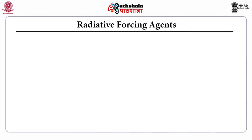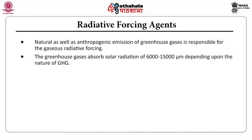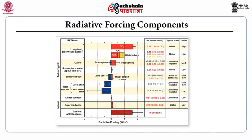Natural as well as anthropogenic emission of greenhouse gases is responsible for gaseous radiative forcing. The greenhouse gases absorb solar radiation of 6,000 to 15,000 micrometers depending upon the nature of the greenhouse gas. The agents of radiative forcing are carbon dioxide, methane, nitrous oxide, chlorofluorocarbons, tropospheric ozone, and atmospheric aerosols. The greenhouse gases are the major radiative forcing agents which cause positive radiative forcing. Aerosols have a negative radiative forcing, and the net anthropogenic radiative forcing adds to a positive radiative forcing over a warming climate.